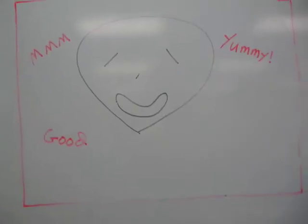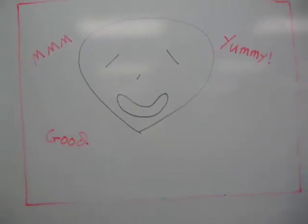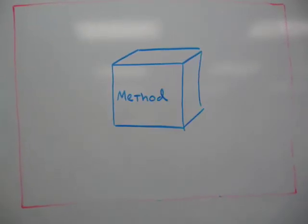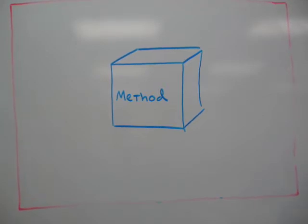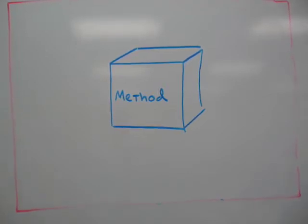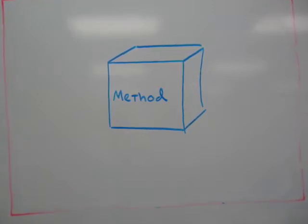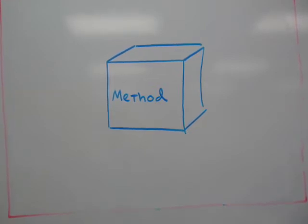Let's talk about methods, parameters, and return values. A method is like a small program that does some task for you. Lots of methods are already included in processing, so you need to know how to use them. You don't need to know how they work, just how to make them do their job. Think of a method as a black box.